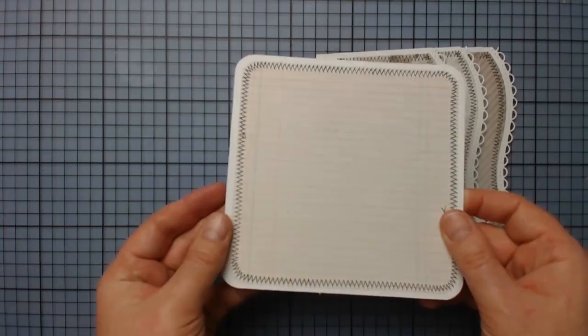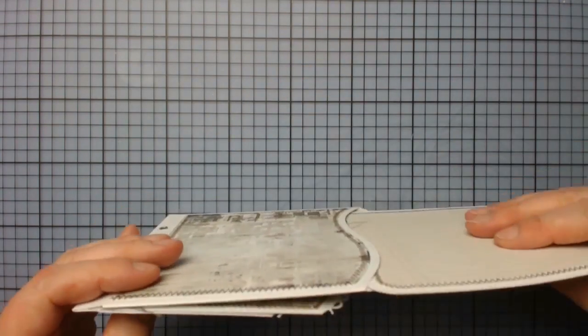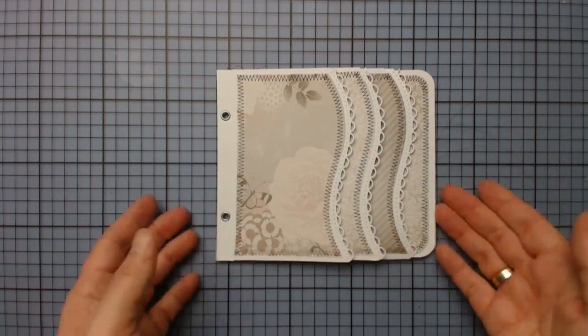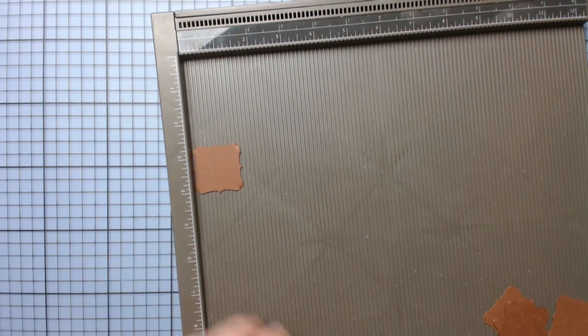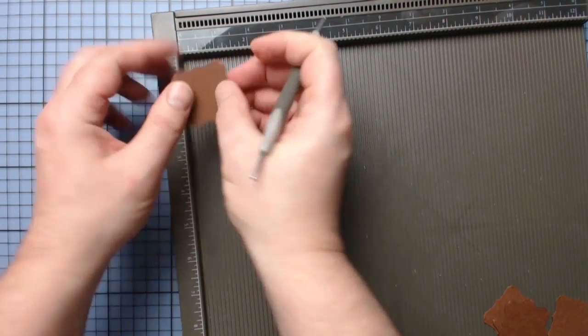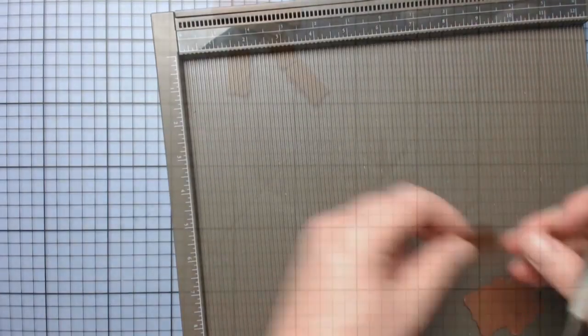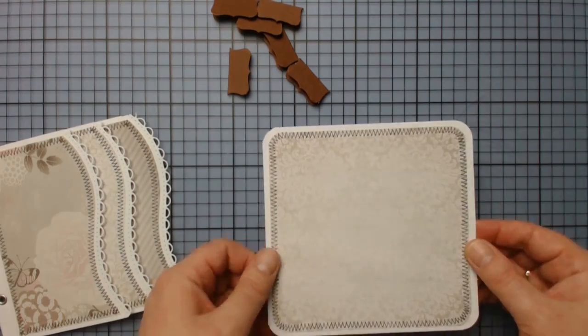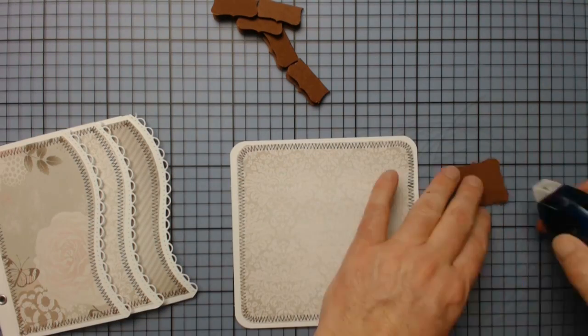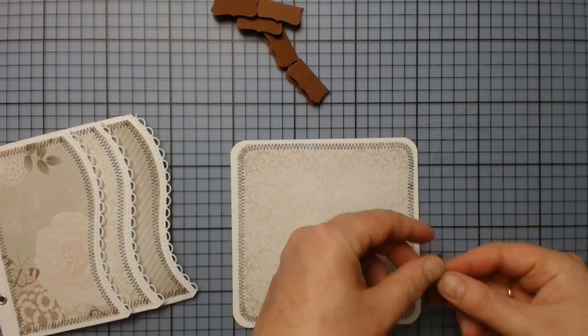And now I'm creating the photo mats for the pockets. They are also sewn and now I'm creating some pulling tabs. You can use almost any kind of punch or die cuts that are symmetrical and can be folded in the middle. These will then be adhered to the center of the outer edges.